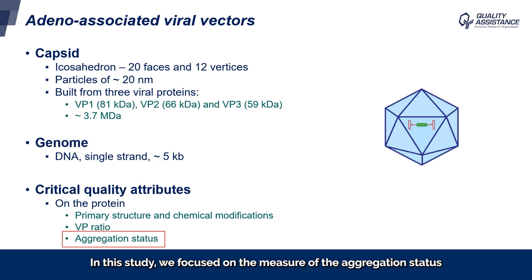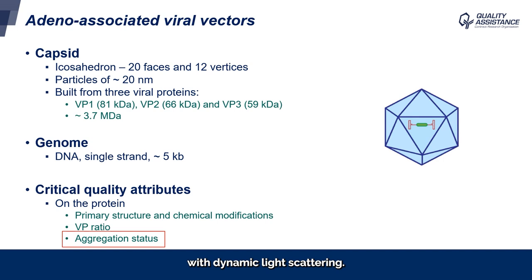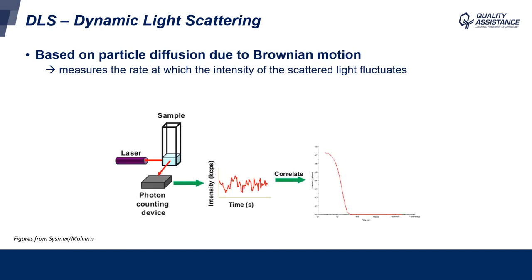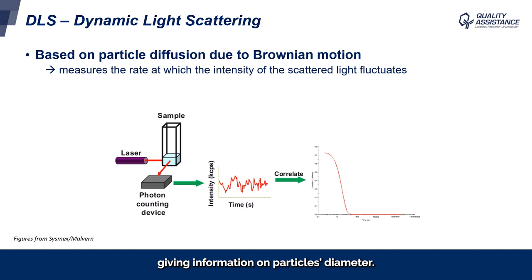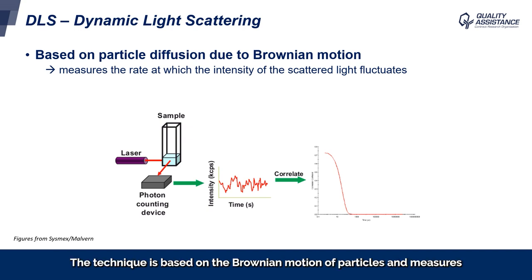In this study, we focused on the measure of the aggregation status with dynamic light scattering. DLS, or dynamic light scattering, is a versatile technique giving information on particles' diameter.